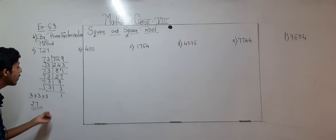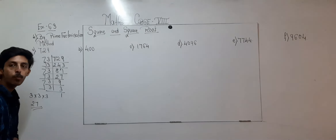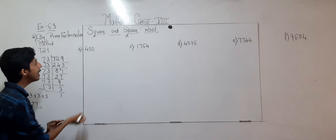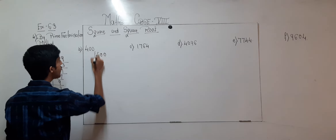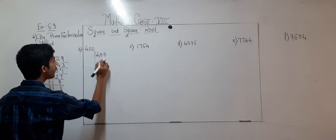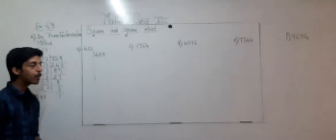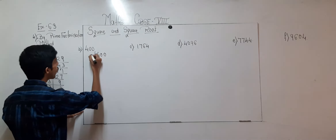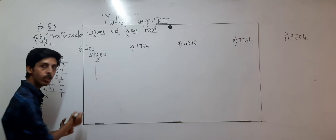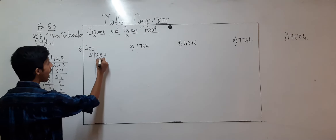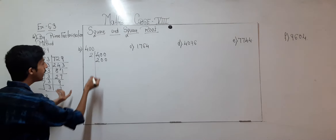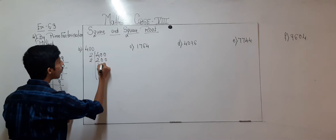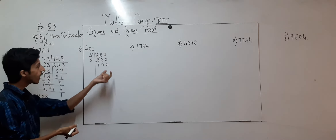Now moving on to question number 2, that is 400. What is the last digit? It is 0. Zero is coming in the table of 2, so 2 times 2 is 4 and here we have two 0s. Again 0 is coming in the table of 2: 2 times 1 is 2, and again 0.